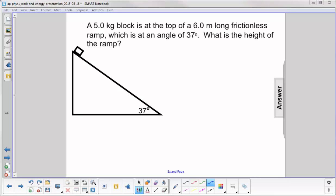A five kilogram block is at the top of a six meter long frictionless ramp which is at an angle of 37 degrees. Here's the 37 degrees, here's the block. What is the height of the ramp?